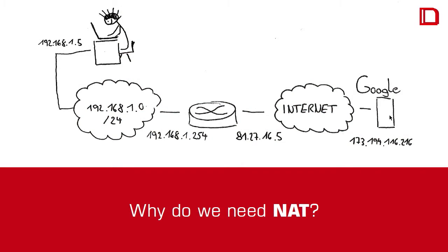So basically, any time you have an internal private LAN or local network that you want to access the internet over, you have to use NAT. If you do a request to Google, like you surf to the Google webpage, then you do a kind of HTTP request, and Google does not see your internal address, but the official address of the request.